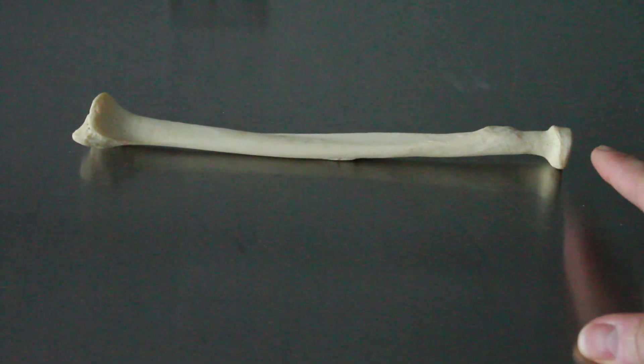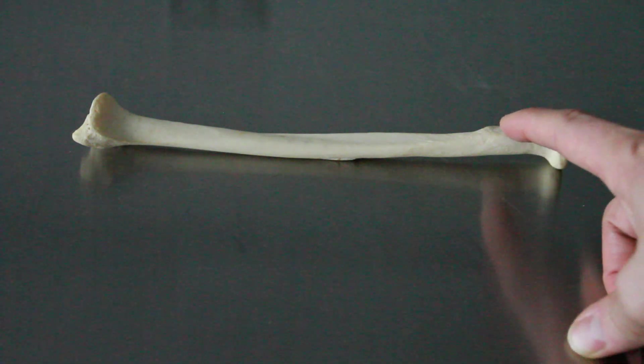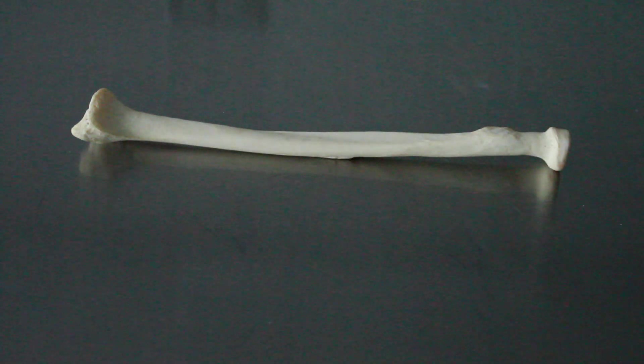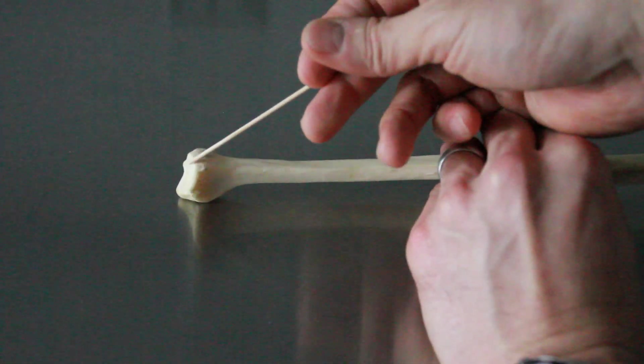And so quick review: head, neck, radial tuberosity, and then styloid process, and then ulnar notch.